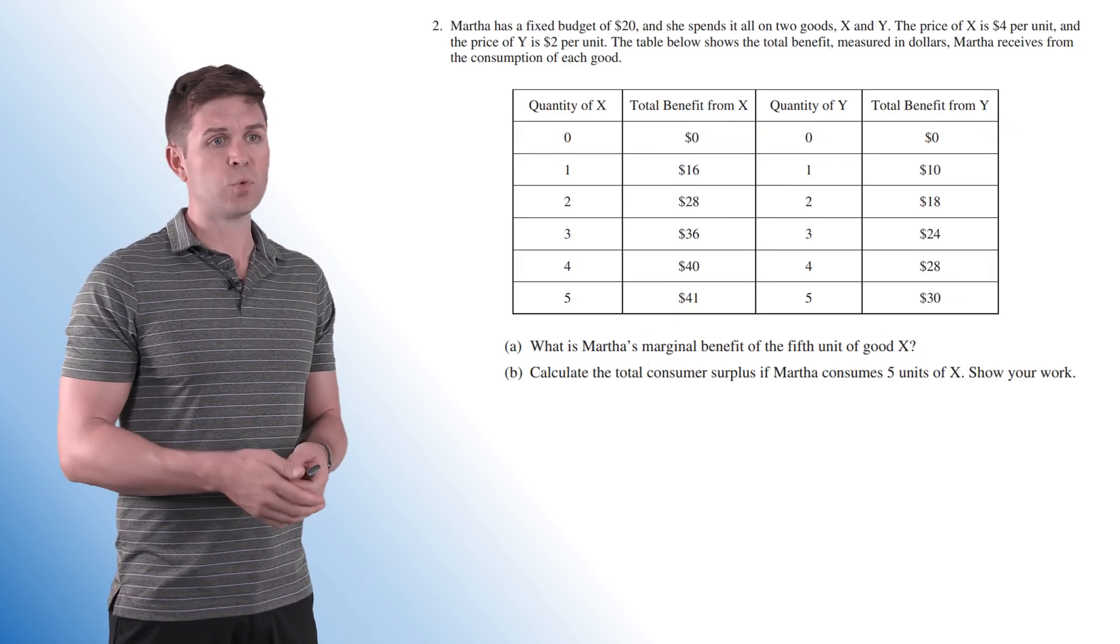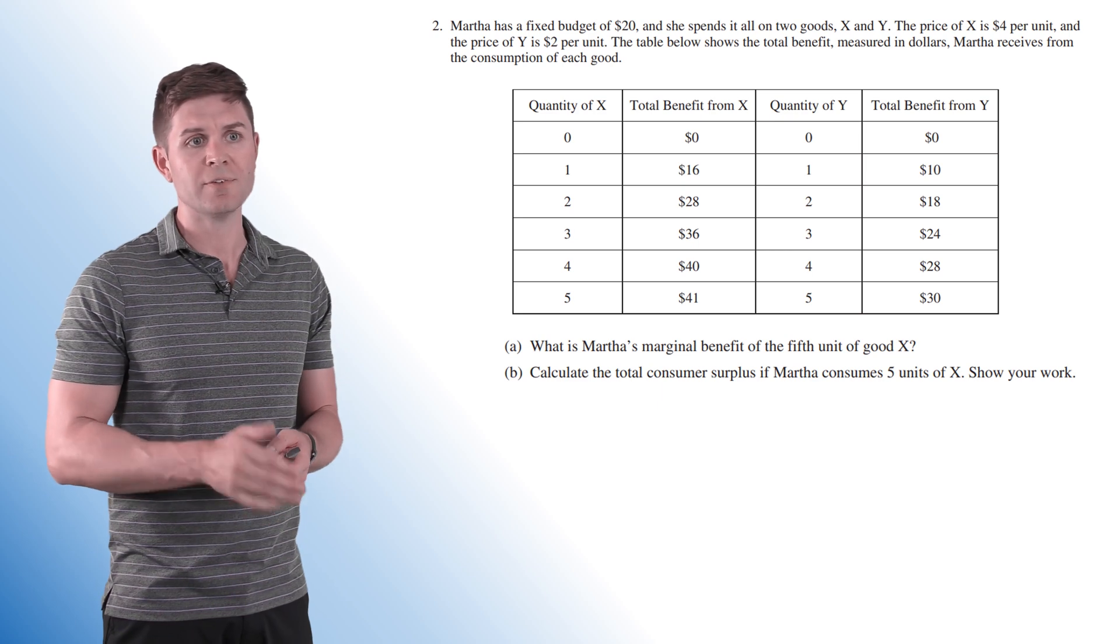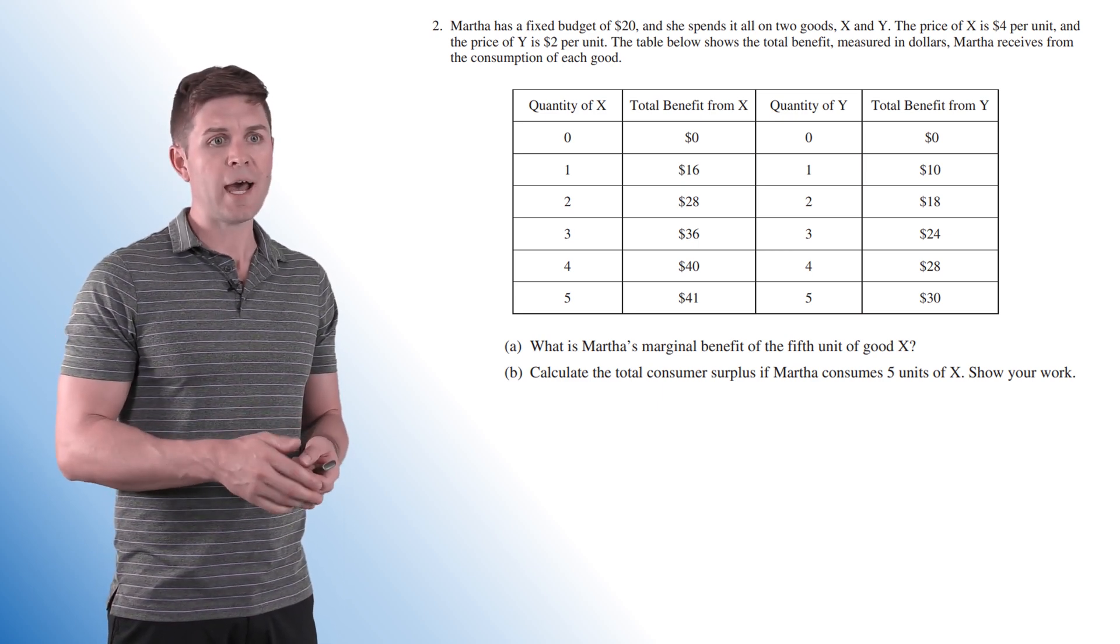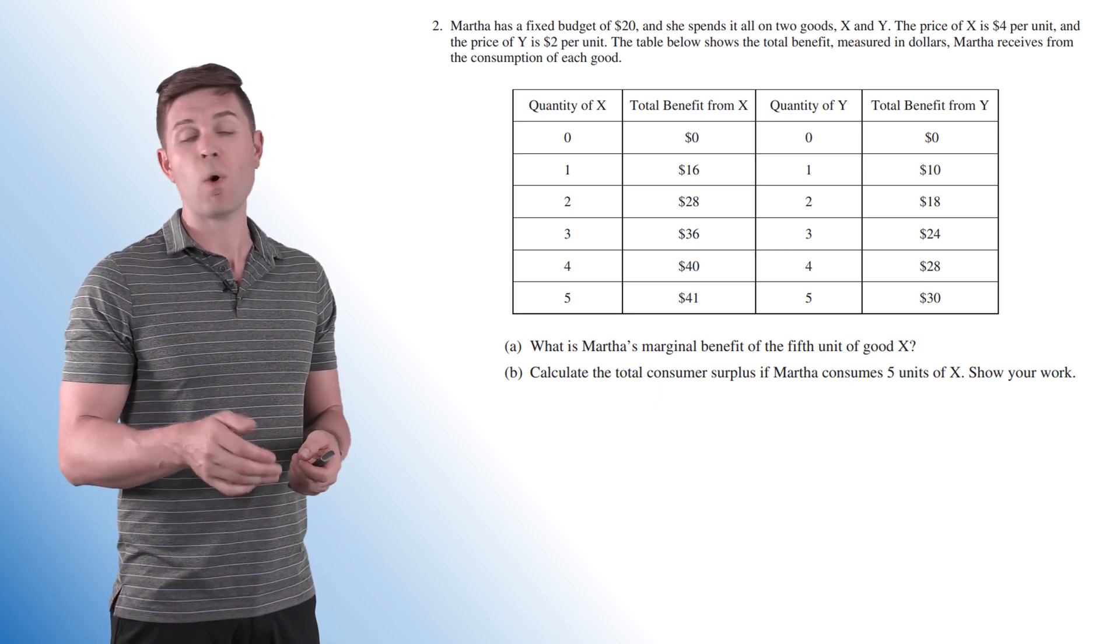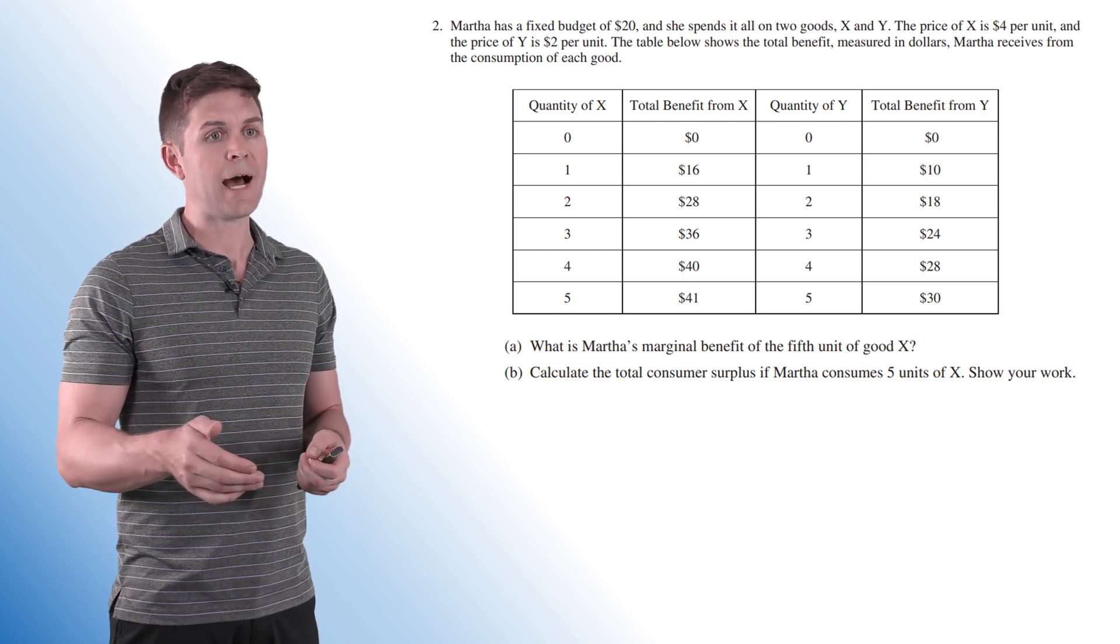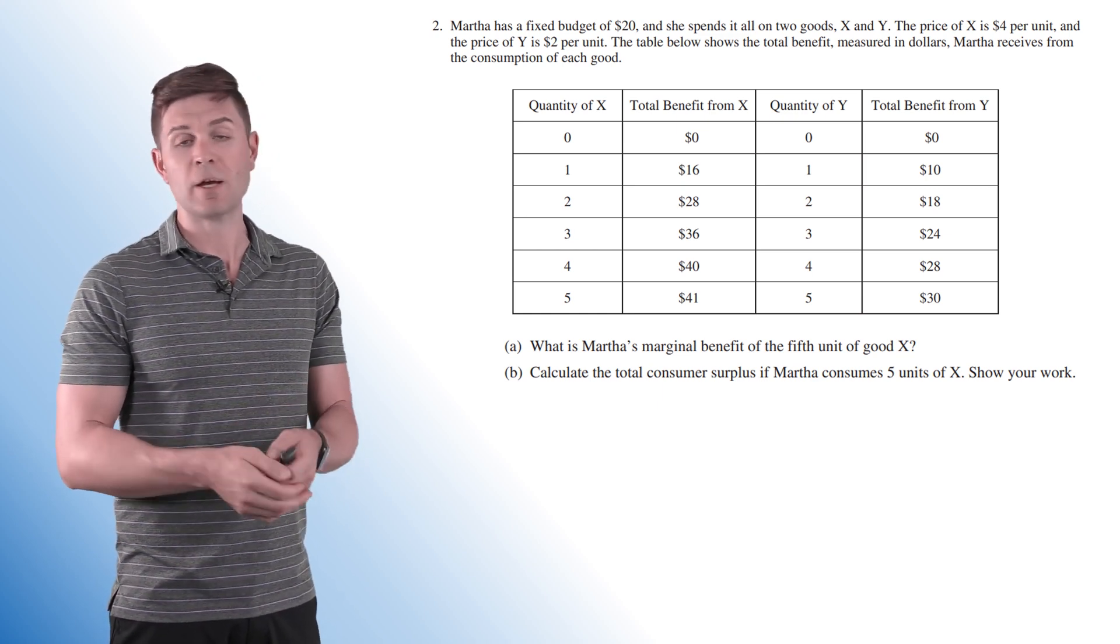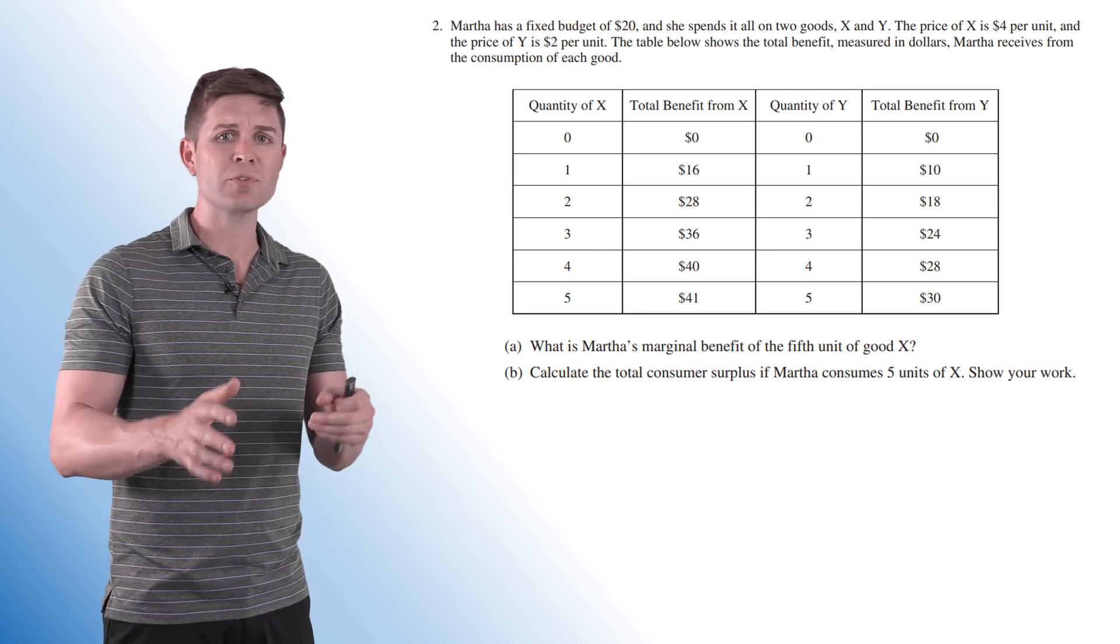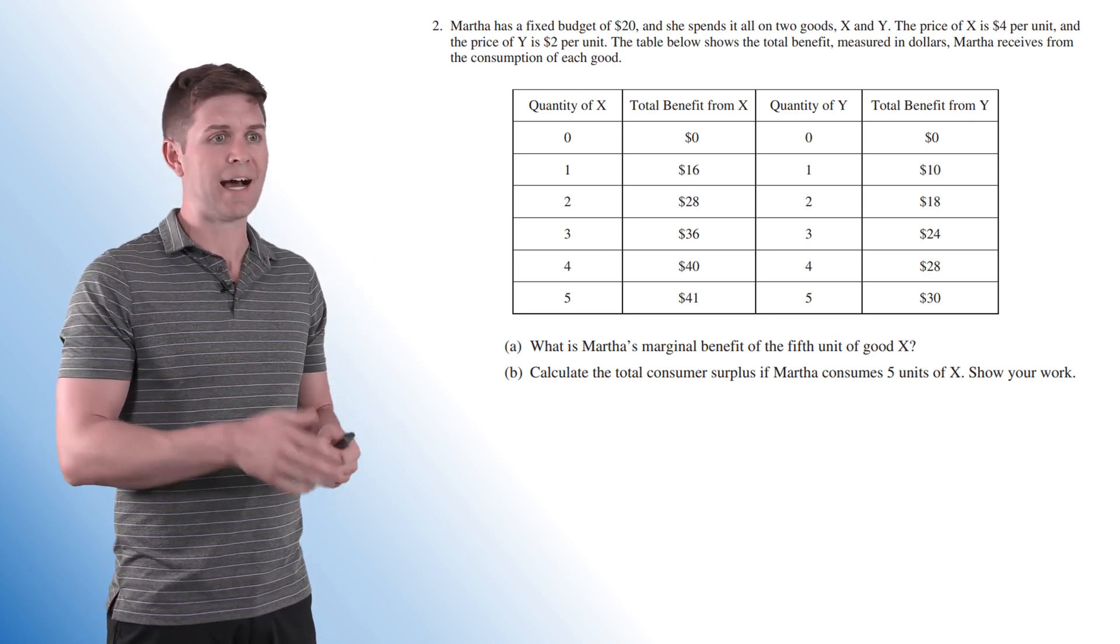All right, so Martha has a fixed budget of $20 and she spends it all on two goods, X and Y. The price of X is $4 per unit and the price of Y is $2 per unit. The table below shows the total benefit measured in dollars Martha receives from the consumption of each good. So we're not dealing with utils on this one. Benefit is measured in dollars.